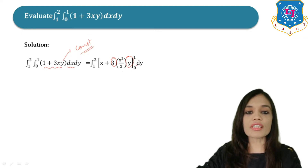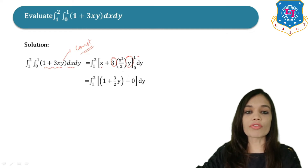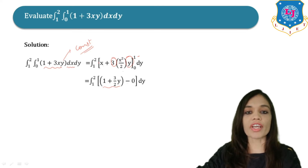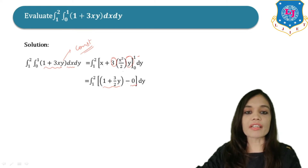Now let us put the limits 0 and 1 in place of x. Putting the upper limit 1, we get 1 + (3/2)y. Now putting 0 in place of x, this term becomes 0 and this term also becomes 0, so in all we get 0. So the result from the inner integral is 1 + (3/2)y.